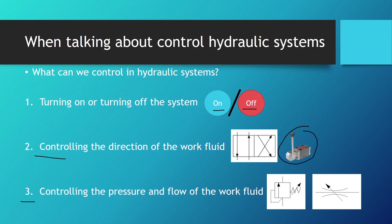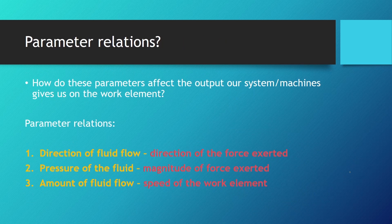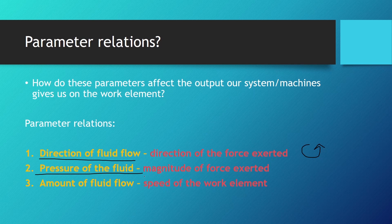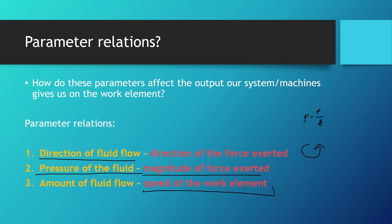Third would be controlling the pressure and flow of the work fluid. Here we can see a pressure relief valve, and here we can see the flow control valve. Changing the direction of fluid flow changes the direction of the force exerted, or torque if we're talking about rotational hydraulic motors. Changing the pressure affects the magnitude of the force exerted — pressure is equal to force divided by area. And the amount of fluid flow will directly influence the speed of the work element at the output, as the speed equations were always influenced by fluid flow.